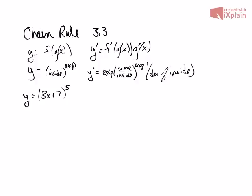So we have 3x plus 7 raised to the fifth. The derivative is going to be 5, 3x plus 7 to the fourth, then times 3. 3 times 5 is 15, and we're done.